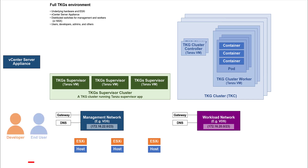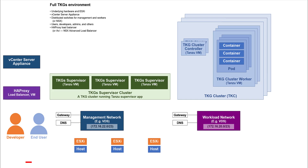While admins will set up the infrastructure and the networks, we need to remember that other people, app developers and end users, will be using the TKG clusters and need network access. The last component TKGS requires is a load balancer. You can use NSX Advanced Load Balancer, AVI, or, as we will do here, you can use HAProxy, which we will launch as an appliance running on a standard VM. It provides load balancing services, and it proxies addresses used by developers and end users, translating them into the actual addresses of all the Tanzu VMs in the TKCs.